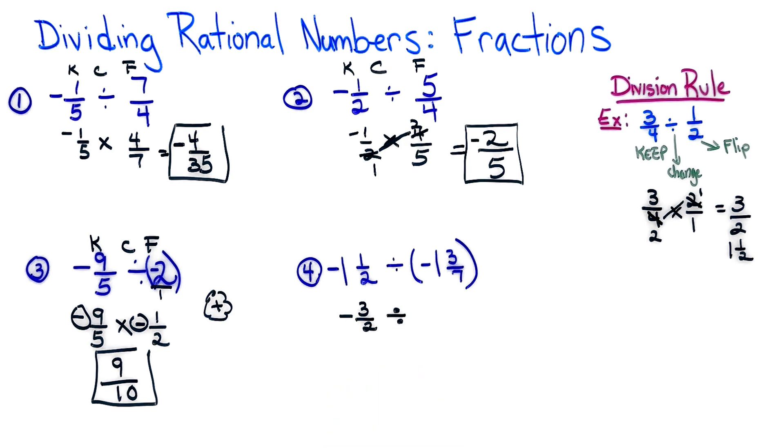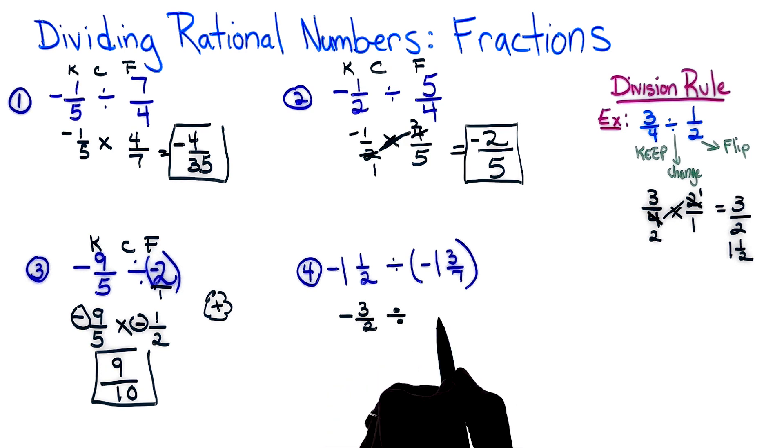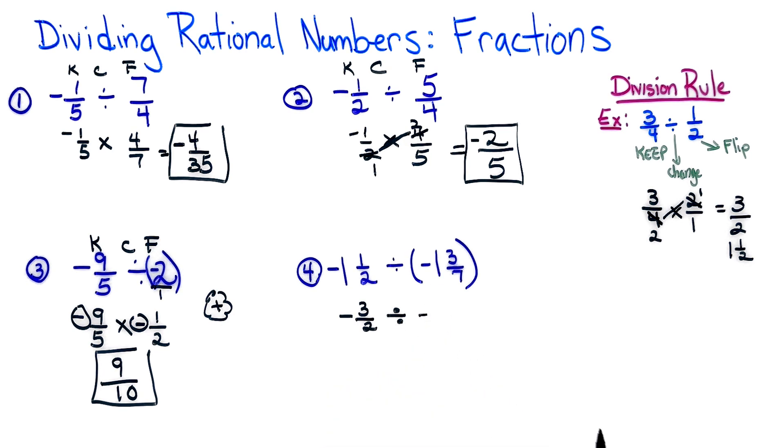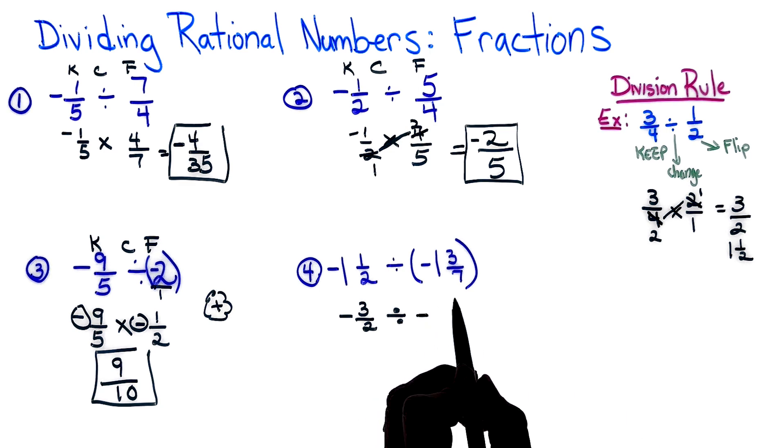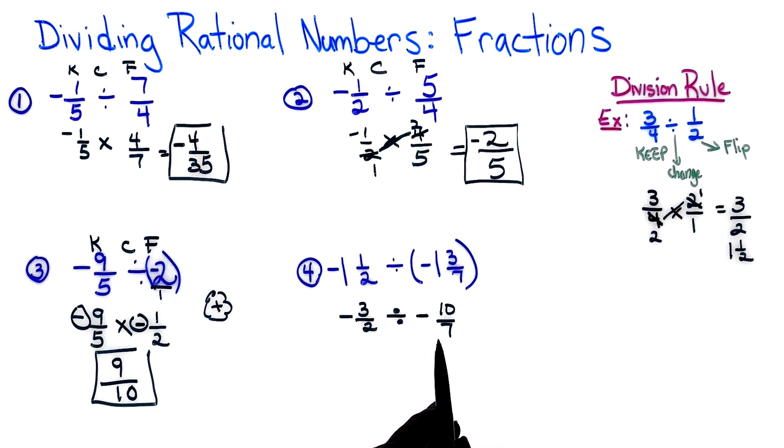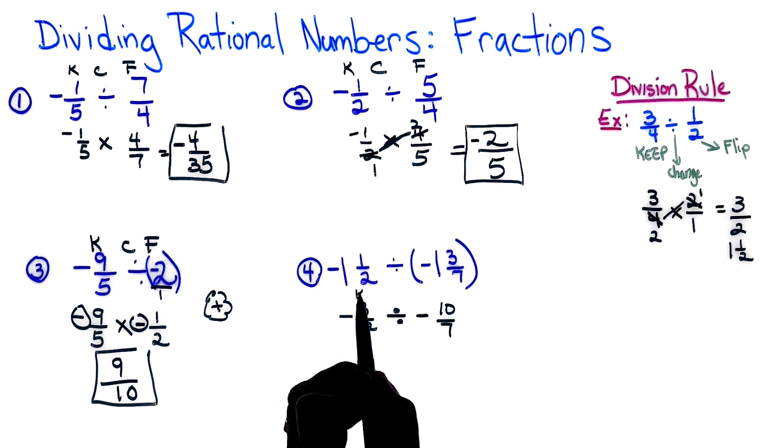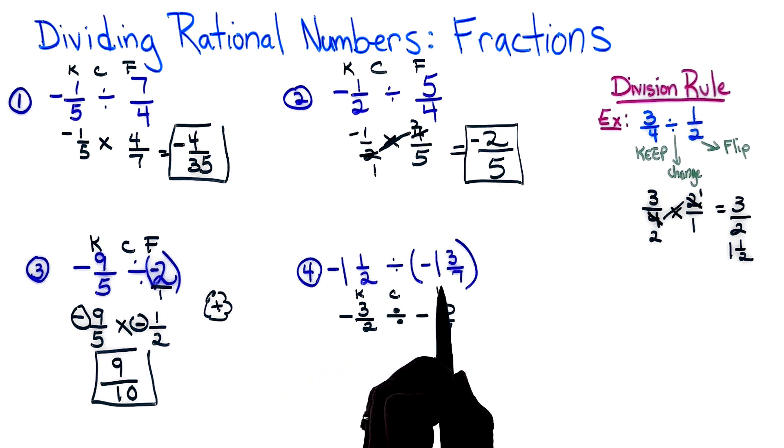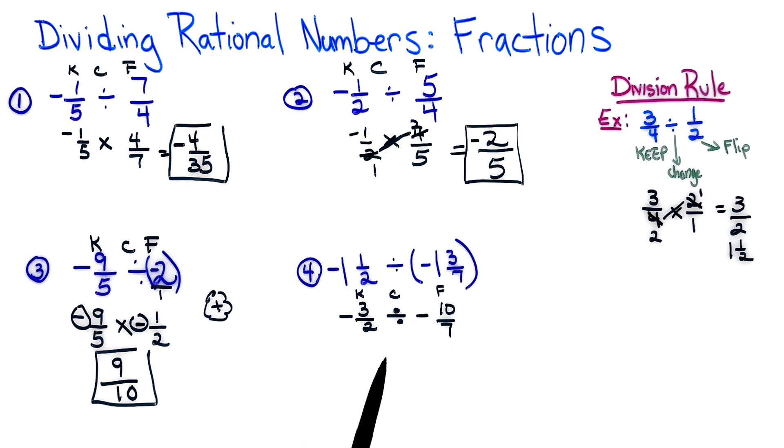So now that I'm seeing this and I see I have two fractions in front of me, now I will keep, change, and flip. I do not try to do more than one step at a time, that's where mistakes are made. So this is negative 3/2 times, remember we have to flip this sign.